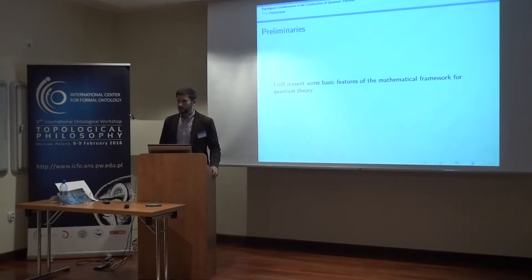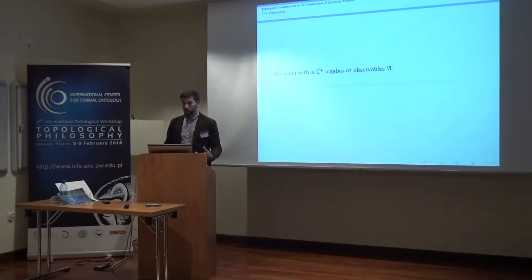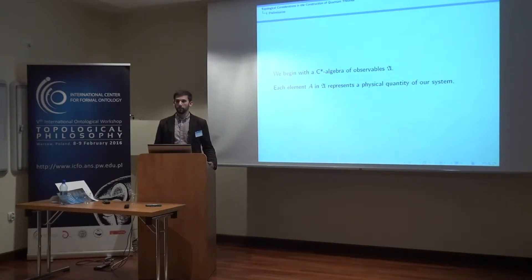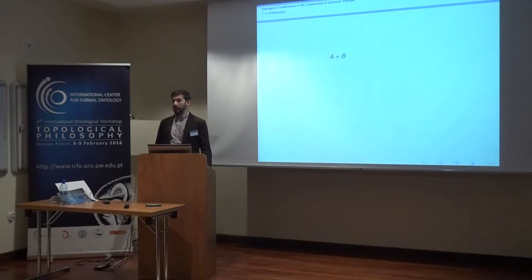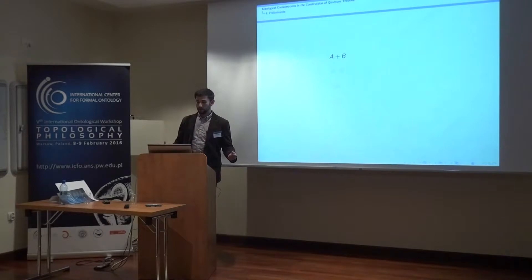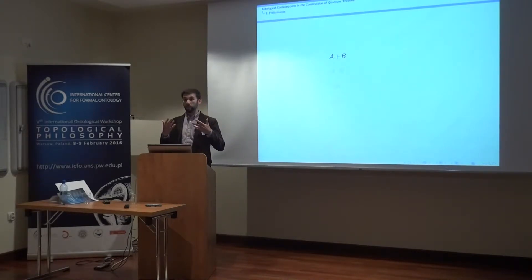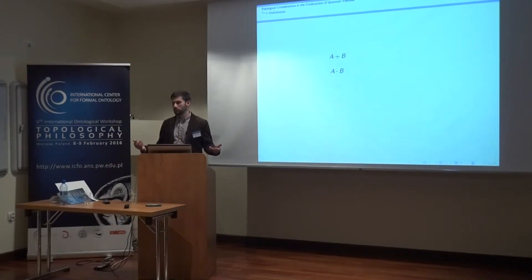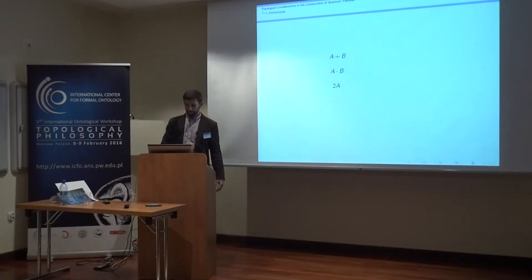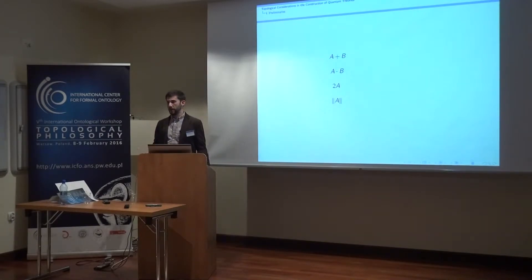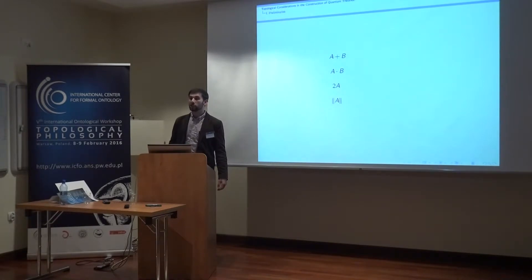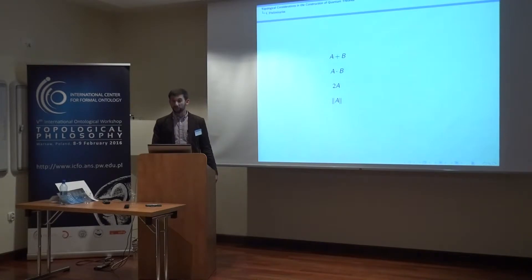Let's look at some basic features of the mathematical framework for quantum theory. We start with a C*-algebra of observables, which I'll denote with this factor A. Each element of this algebra represents some physical quantity of your system. Having a C*-algebra means we have a number of operations defined: given any two quantities A and B, I can add them to form A plus B, I can multiply them to form A times B — importantly, multiplication in quantum theory is not commutative — and I can multiply any quantity by scalars. In addition, I have a norm defined on my algebra: the norm of a quantity A denotes the maximum possible value that A can take on, defining a notion of boundedness.